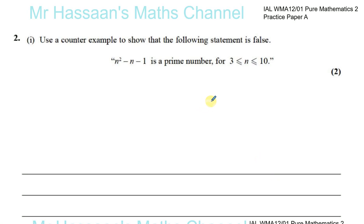Question number two from practice paper A for the new IAL P2 Pure Maths 2 paper. This is again one of those newer topics. Use a counter example to show that the following statement is false: n squared minus n minus 1 is a prime number for values of n between minus 3 and 10.